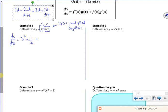Plus the second bit, so that's log X, times by the first bit differentiated, which is 2X. So I've got first bit times by second bit differentiated plus second bit times by first bit differentiated.